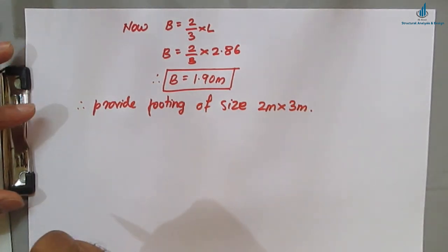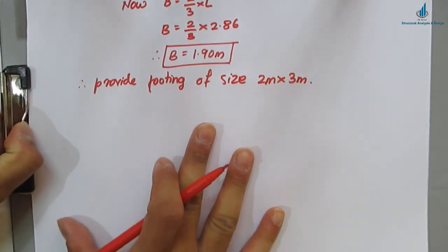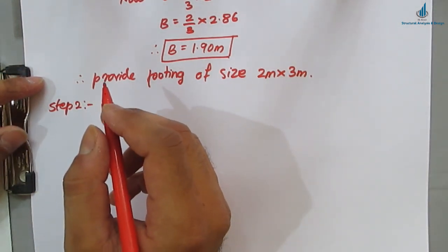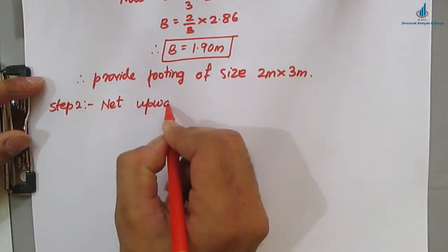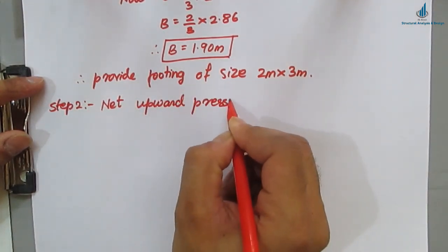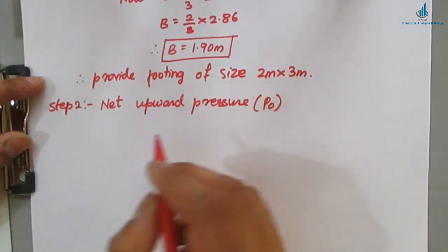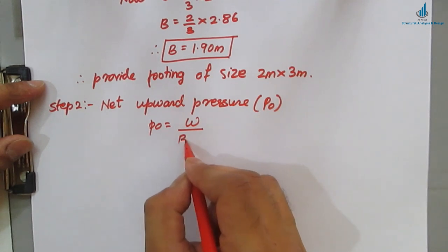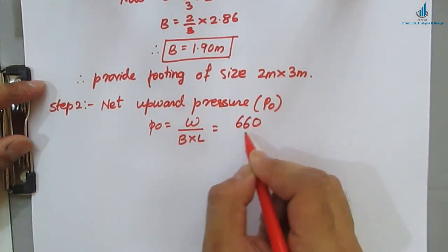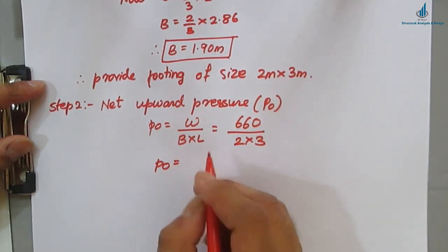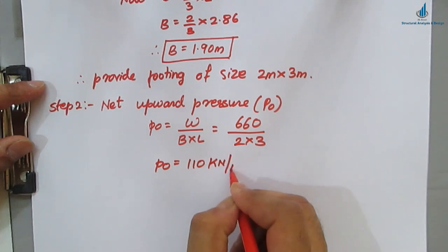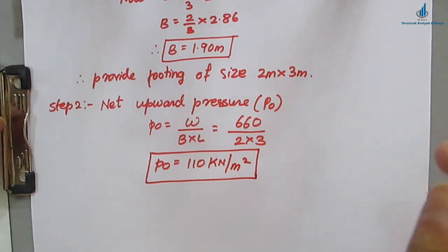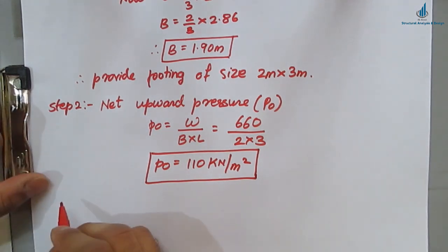Step 2: Calculate net upward pressure. p₀ = W / (B × L) = 660 / (2 × 3) = 110 kN/m². This is an important value that will be used in the next steps.